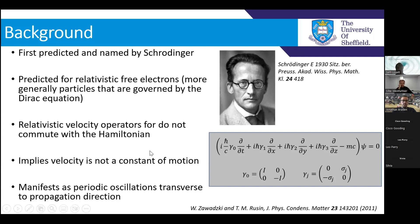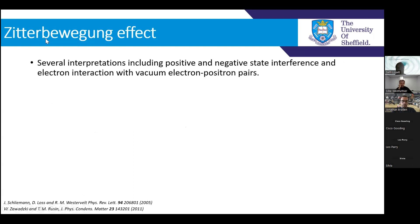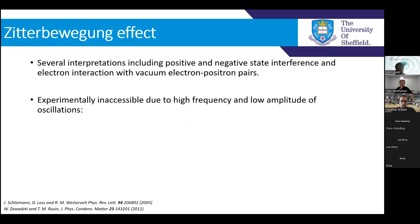So if you've got a particle propagating in the Y direction, you expect these periodic oscillations in the X direction — it's quite counterintuitive. There are several interpretations of this effect. Schrödinger framed it as interference between the positive and negative energy states of relativistic free electrons — the positron and the electron state. There are also some interpretations as being some sort of interaction between vacuum electron-positron pairs. But most importantly, it's extremely experimentally inaccessible.